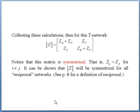By collecting all these equations together, you will have your T-network Z matrix: Z11 equals ZA plus ZC, Z12 equals ZC, Z21 equals ZC, and Z22 equals ZB plus ZC. Notice that this matrix is symmetrical, where Zij equals Zji for i not equal to j. It can be shown that Z will be symmetrical for all reciprocal networks.